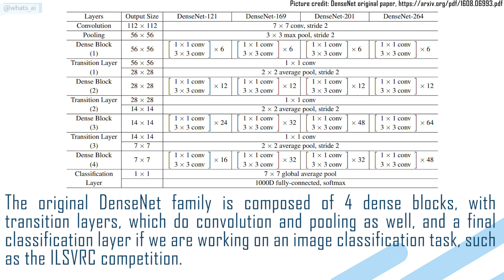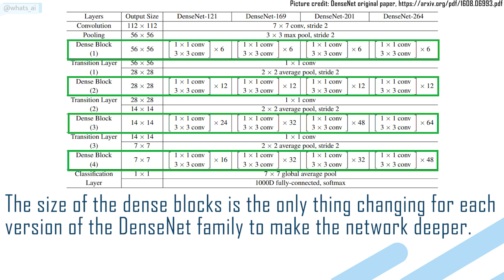The original DenseNet family is composed of 4 dense blocks with transition layers, which do convolution and pooling as well, and a final classification layer if we are working on an image classification task, such as the ILSVRC competition. The size of the dense block is the only thing changing for each version of the DenseNet family to make the network deeper.